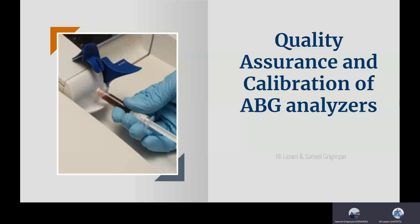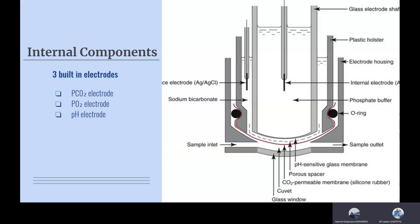So today we're going to be talking about quality assurance and calibration of ABG analyzers. First we're going to talk about the three things that we can actually measure in an ABG. An ABG machine has three electrodes, also known as three sensors,